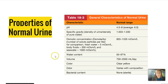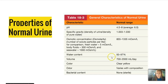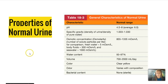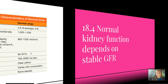The properties of normal urine: pH is about 4.5 to 8, with an average of about 6, close to neutral. Water content is about 93 to 97%. Color is normally clear yellow. Bacterial content should be none — it should be sterile, unless you have some kind of urinary infection.